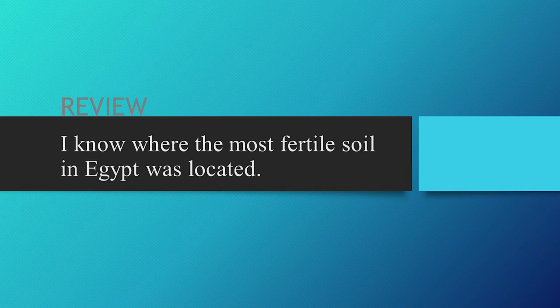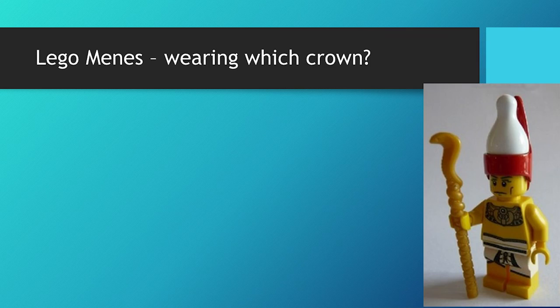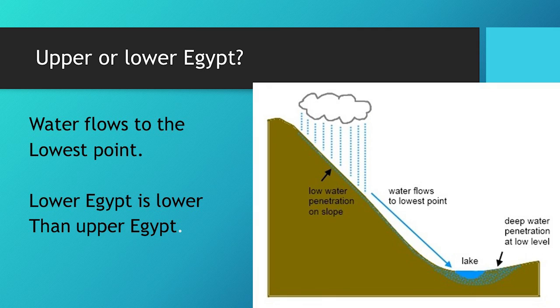Where's the most fertile soil located? The Nile Delta. Which pharaoh unites Upper and Lower Egypt? Menes. Why do they call it Upper or Lower Egypt? Upper Egypt is higher ground — the water flows down from Upper Egypt to Lower Egypt and then out into the Mediterranean Sea. Excellent. I hope you enjoyed today's class. Next time on World History: a video about pyramids. We'll see you then.